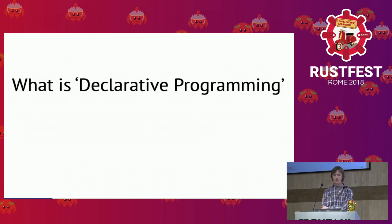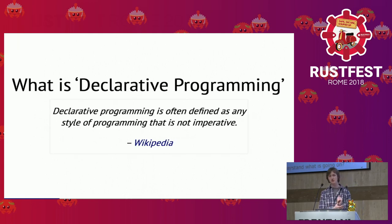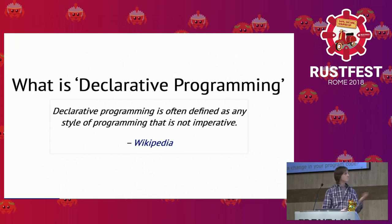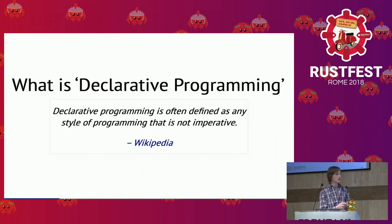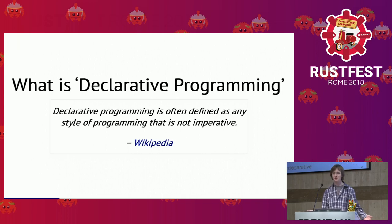So what does this actually have to do with declarative programming? Wikipedia tells me that a declarative program is often defined as any style of programming that is not imperative. The Wikipedia page goes on to give examples like HTML, regular expressions, SQL, Haskell, and Prolog.